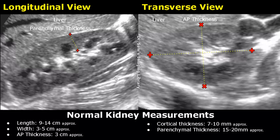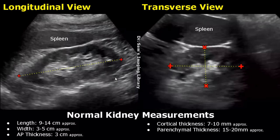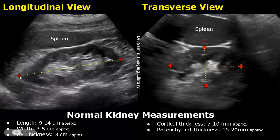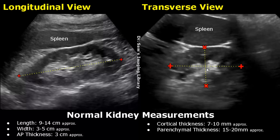These images are of the left kidney. In the longitudinal view, we can see how the length is measured. And in the transverse view, we can measure the width and the AP thickness.